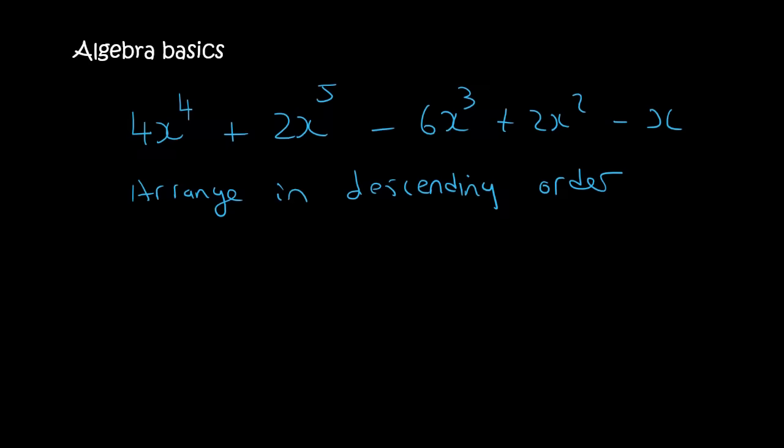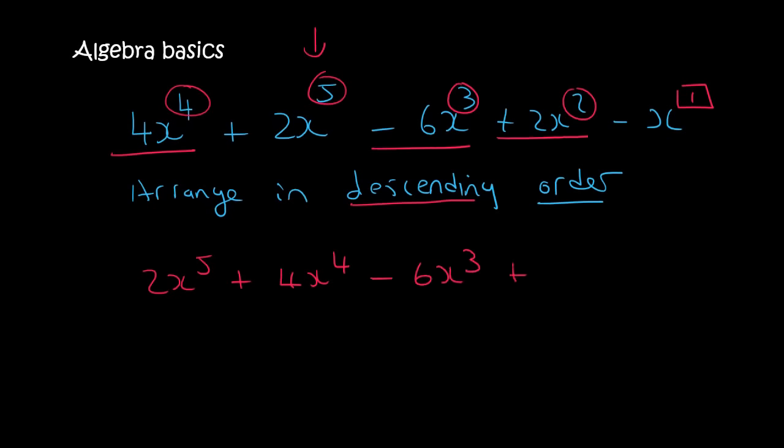Let's practice this a bit. So here we're going to arrange this in descending order. And they're always talking about the exponents, they're not looking at the numbers in the front. And then remember if there's nothing there, then it's a 1. So descending means from biggest to smallest. So that's the biggest one over there, then it's this one, then it would be this one, then it's this one, and then it's this one.